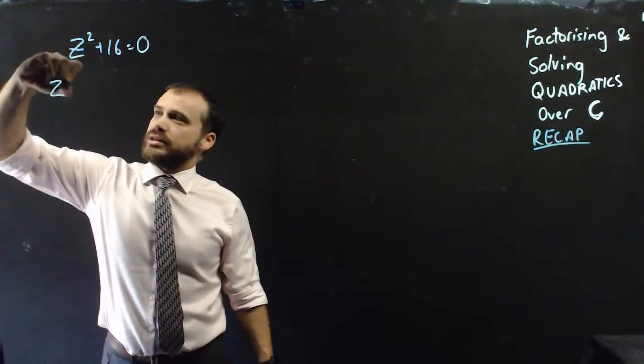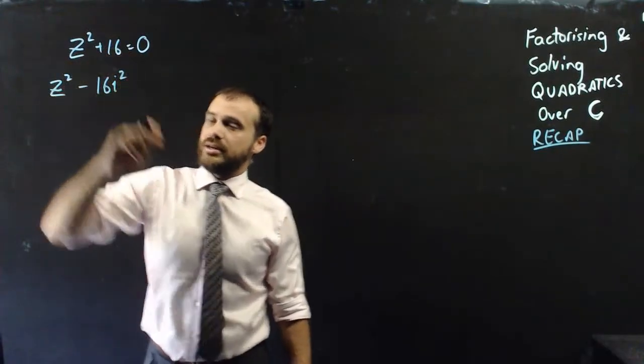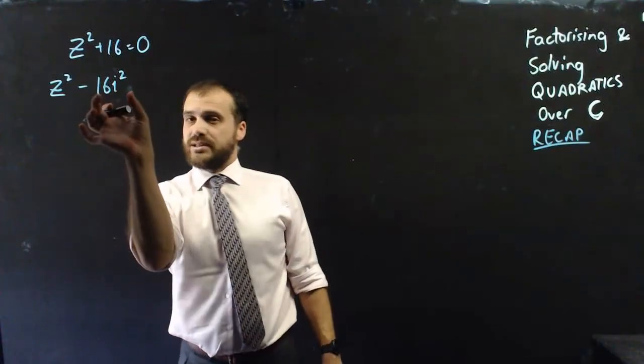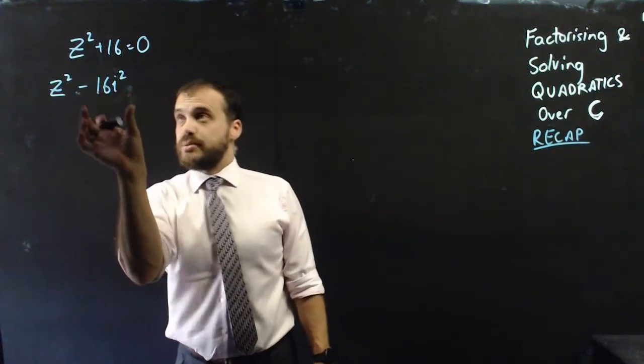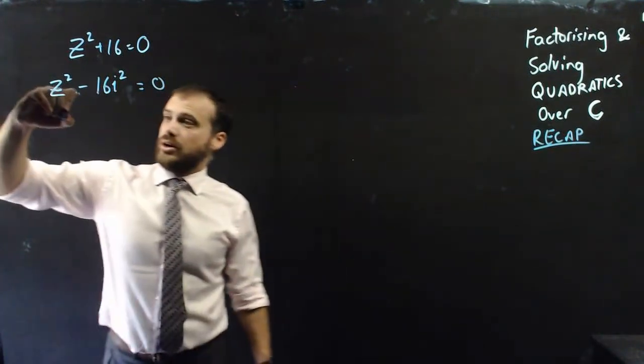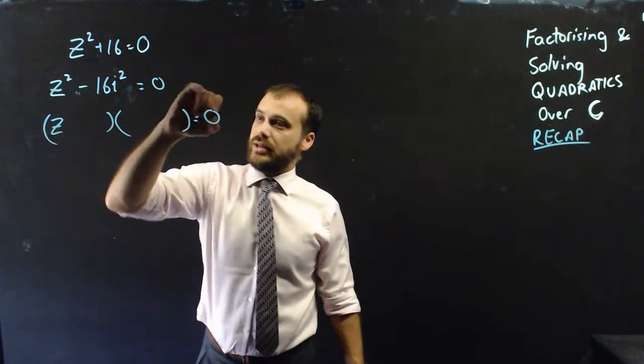But we can rewrite this as z² - 16i². i² is negative 1, which makes that 16 times negative 1, negative 16. But then I've put a negative here, which makes it equal to positive 16. And now that it's a difference of two squares, I can write it as a set of brackets like that.